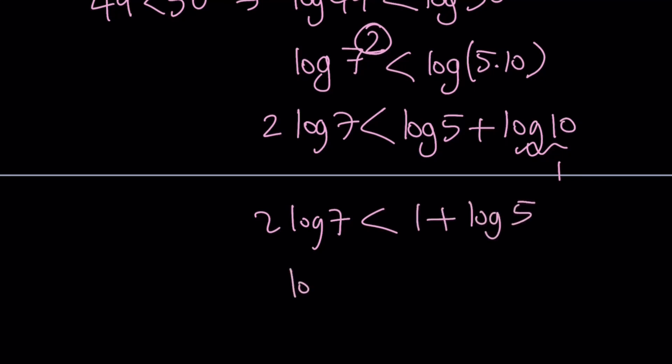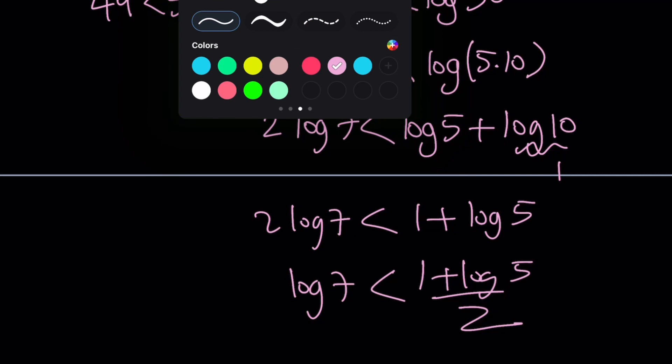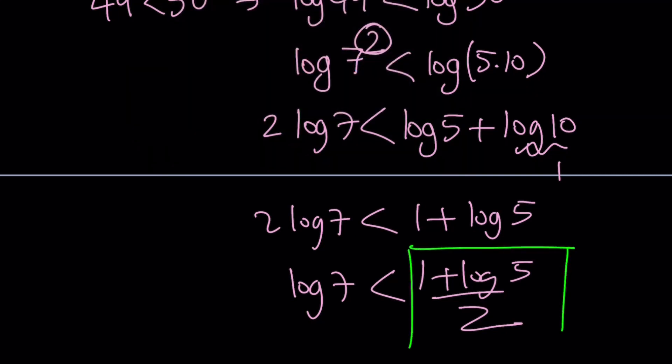And finally, dividing both sides by 2 gives us log 7 is less than 1 plus log 5 over 2. So that is the end of the first method. We were looking for the larger number and that happens to be 1 plus log 5 over 2.